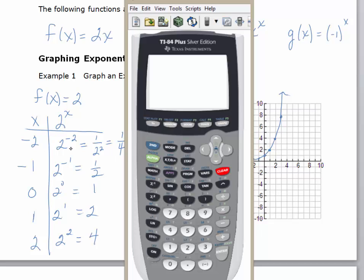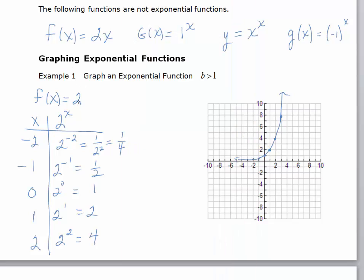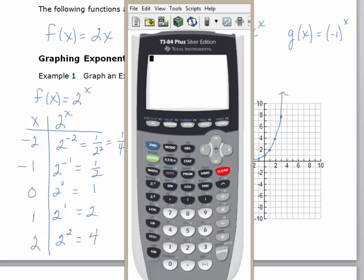So for the first, we'll just look at the values that we got for f(x) equals 2 to the x. Alright, so if I want to do 2 to the negative 2, I hit the 2, and I use the caret key right above the clear. And then hit the negative, the one in parentheses, and then hit 2, and then hit enter.